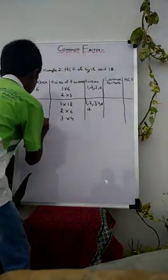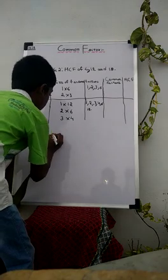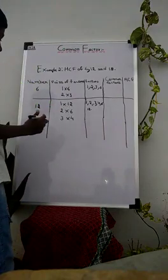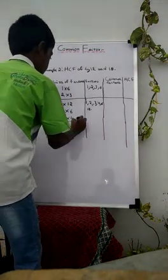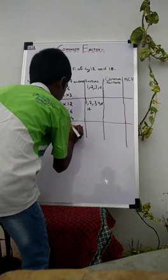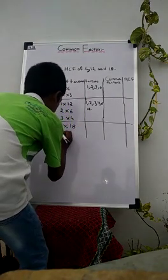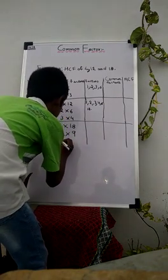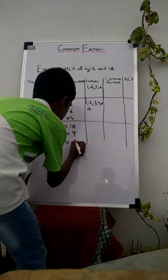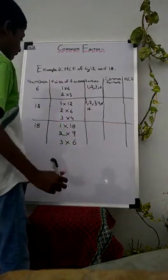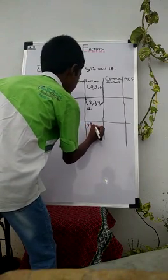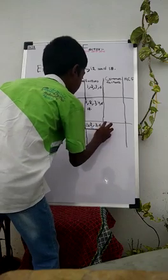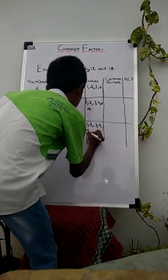Number 18. Pairs of factors of number 18 are: 1 × 18, 2 × 9, and 3 × 6. The factors of 18 are 1, 2, 3, 6, 9, and 18.